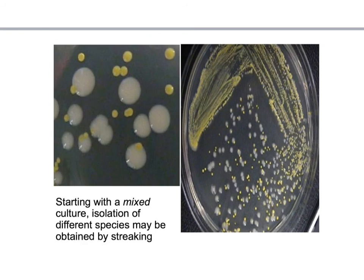Here we have a petri dish that has a mixed culture. We know it has a mixed culture with different species because we can see the difference in the colonial characteristics. We can see the yellow colonies representing one type of bacteria.